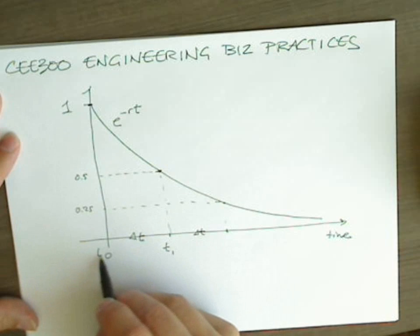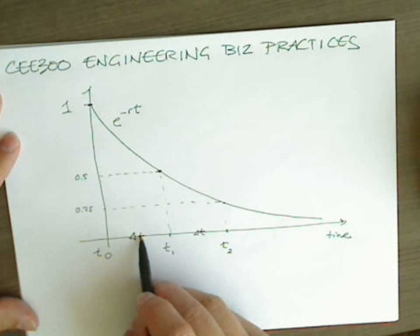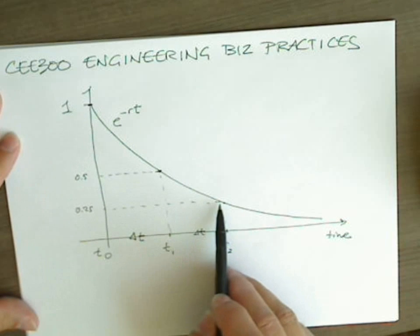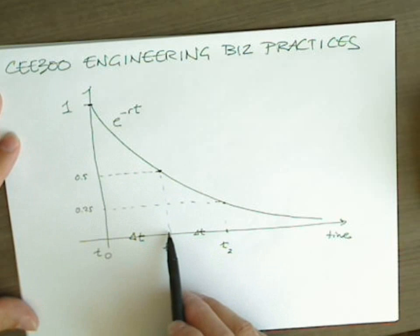So we'll call this t1, t0, t2. And over every interval delta t called the half-life, the radioactive decay is one half what it was in the previous time.